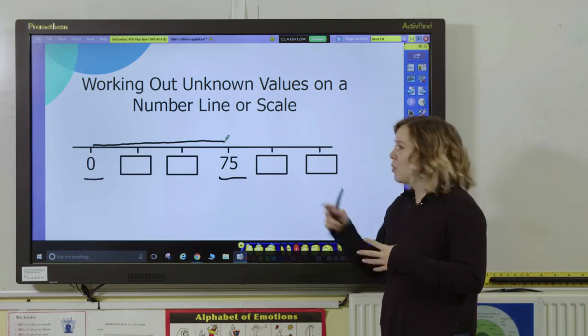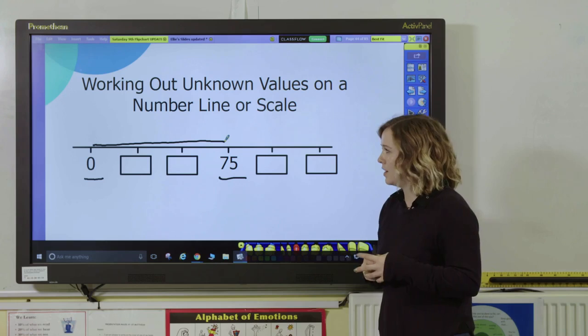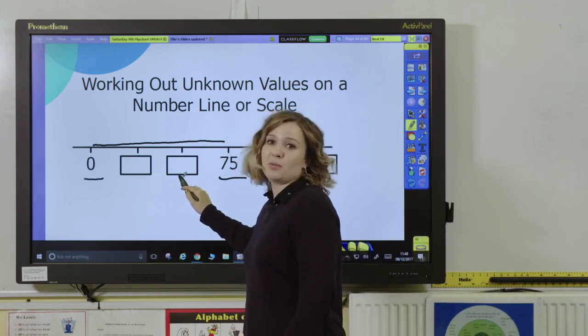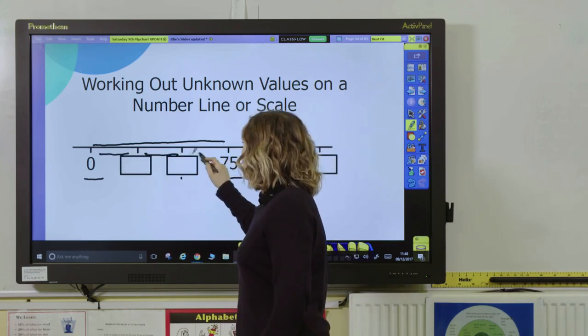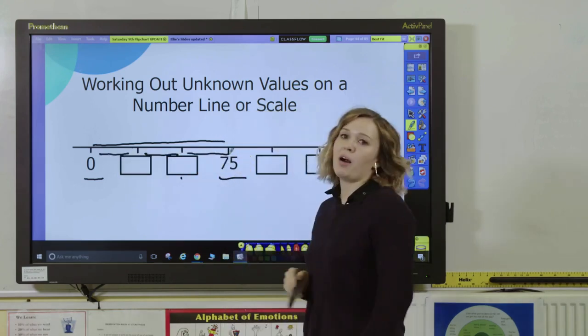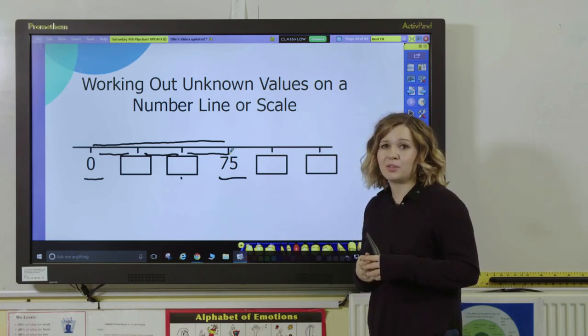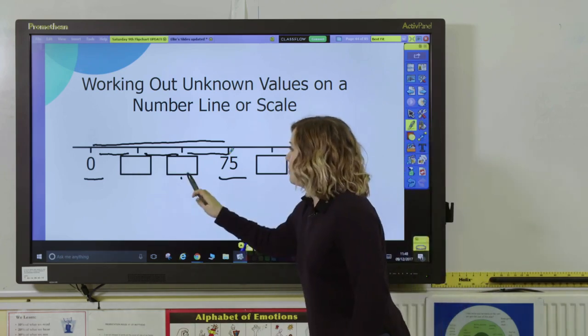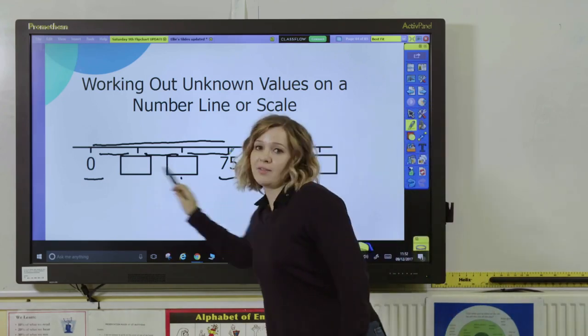You then want them to see what values do we need to find in between? How many values do we need to find? So we've got a value here that we don't know and another one here. In total there are 1, 2, 3 equal parts between 0 and 75. The equal is really important because that helps the pupils understand what they need to do to find out how much each of these is worth.